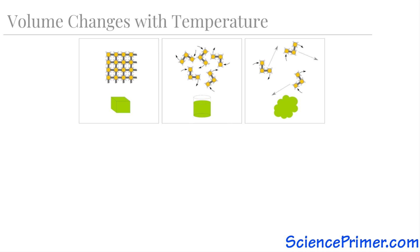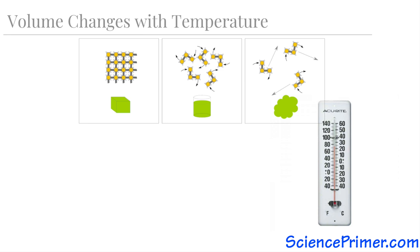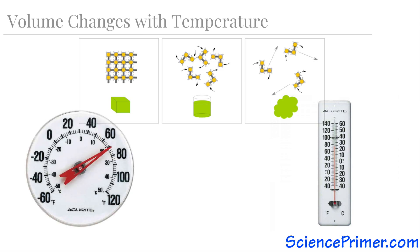Measuring volume change with change in internal kinetic energy is one way we measure temperature. The common alcohol thermometer is designed so that the very small changes in volume driven by changes in temperature force the red liquid up and down a glass tube, showing temperature changes. There are also solid thermometers. A typical dial thermometer has a small metal coil at its center. This thermometer works due to the expansion and contraction of the metal in this coil. Two types of metal are bonded together, each with slightly different rates of volume change with temperature, and their differences in response to temperature force the coil to change shape enough to register changes in temperature.